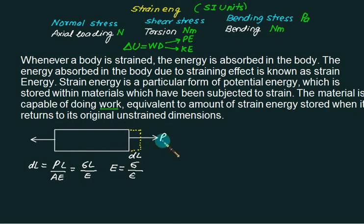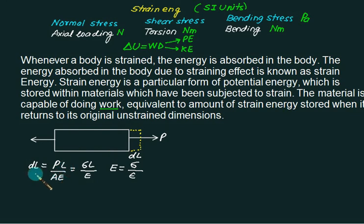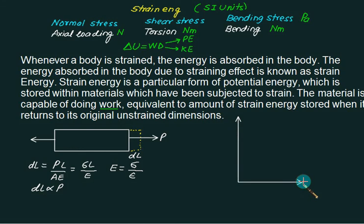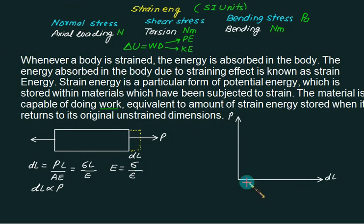When you apply load equal to zero, there is no deformation. As you start applying load from 0 to P, gradually increasing the load, the value of DL will change. For a particular figure, length is constant, A is constant, E is constant. So we can conclude that DL is directly proportional to P. On the graph, if this axis is P and this axis is DL, we have a proportionality constant K. This graph clearly indicates that DL is proportional to P.